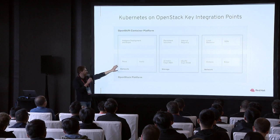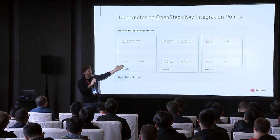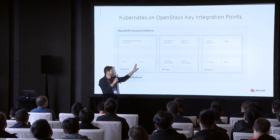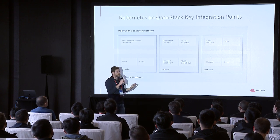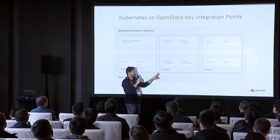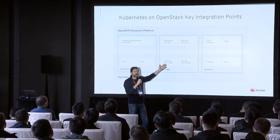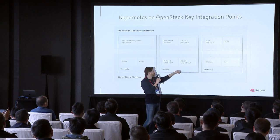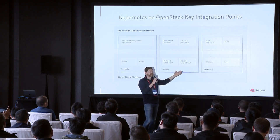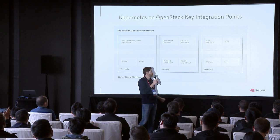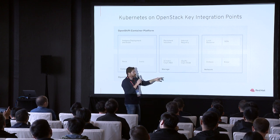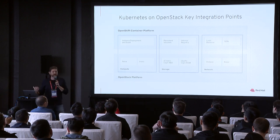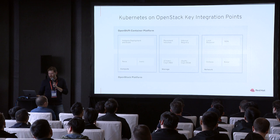For compute, there is Nova and Ironic — virtual machines and bare metal. For storage, there are at least two integration points: one through block devices via Cinder, and another for object storage through Swift or an S3 gateway. On the network side, we're going to expand on that a little bit today — you can use Octavia and Kuryr. We're going to talk about Kuryr today.